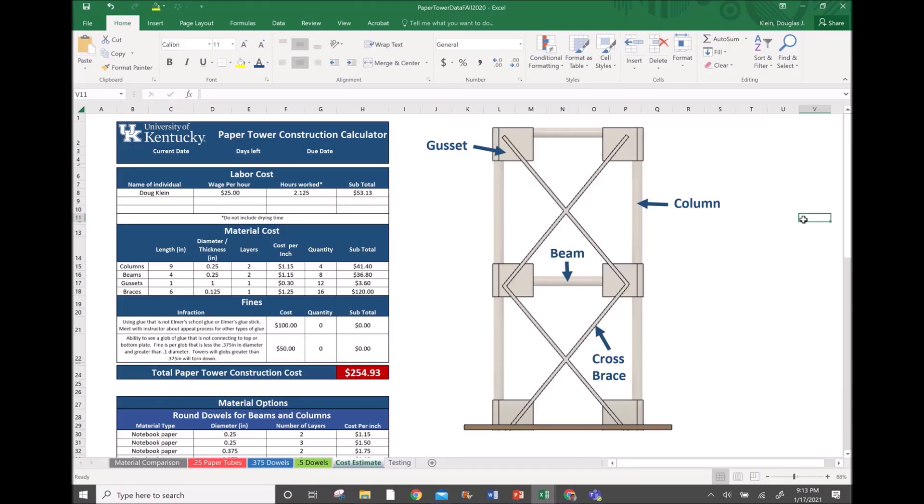If we're successful, we can put that into our construction calculator and determine if our design was more efficient than the individuals we might be competing against for the best design. We're going to add in our time of production. In my situation, it took me a little bit over two hours to get mine developed, not counting glue time. I'm then going to put in prices for my beams, my columns, my gussets, and my braces, and I'm going to use the calculated values down here at the bottom.